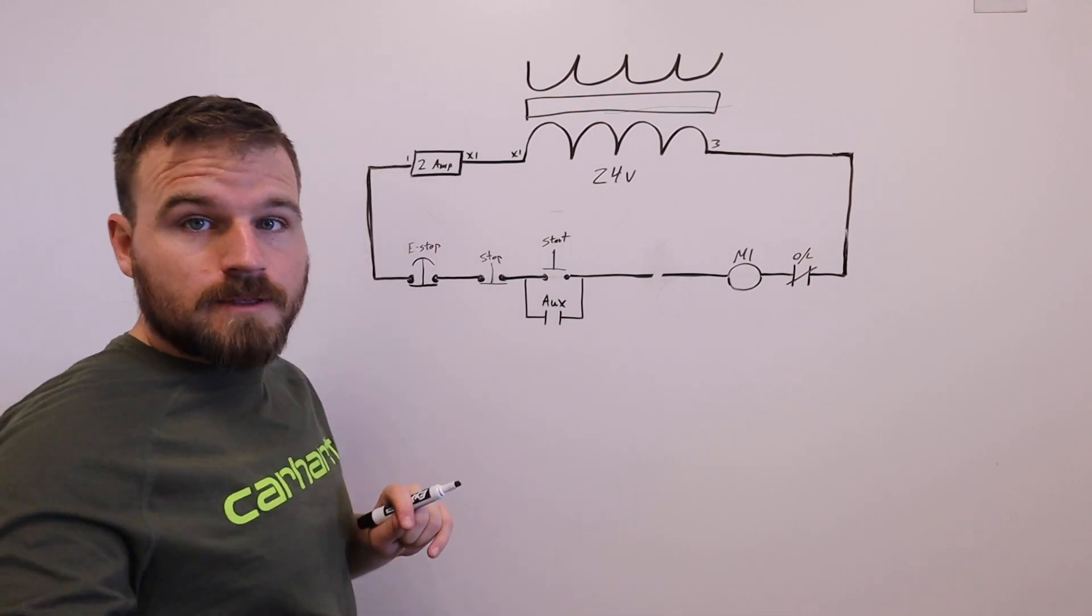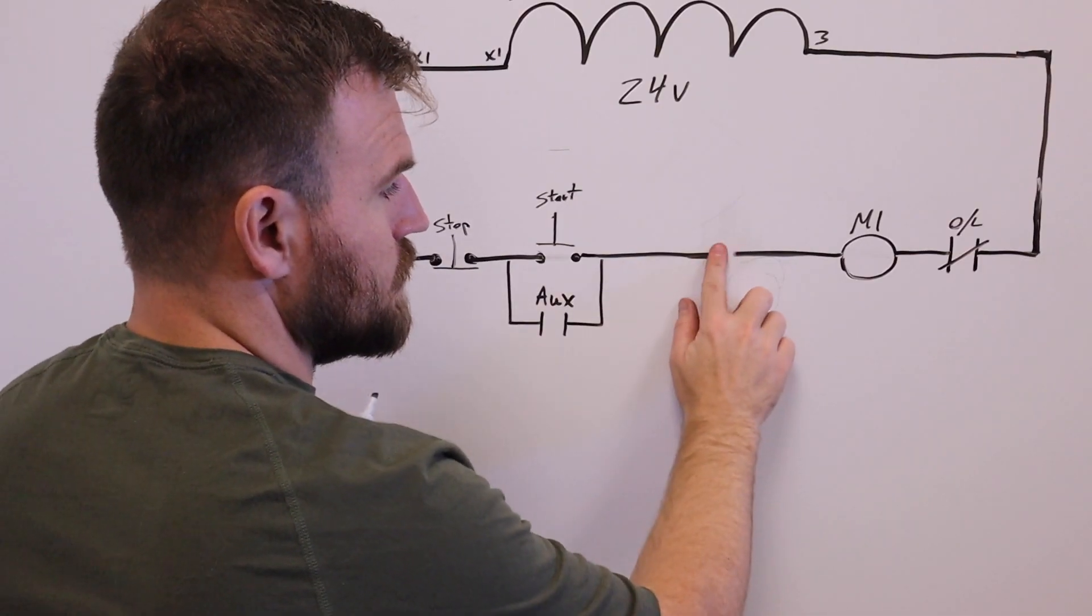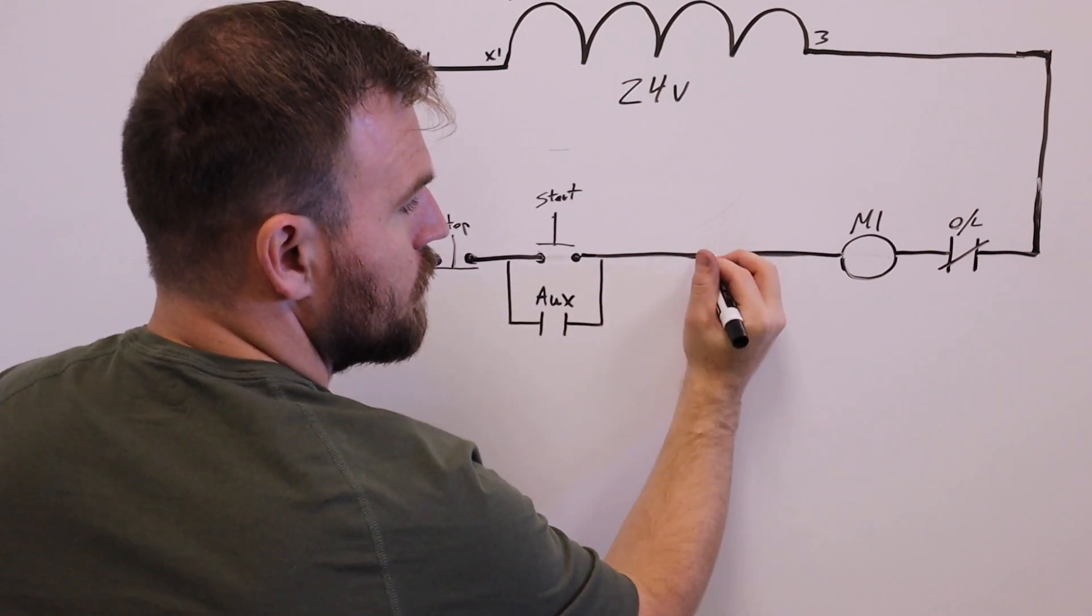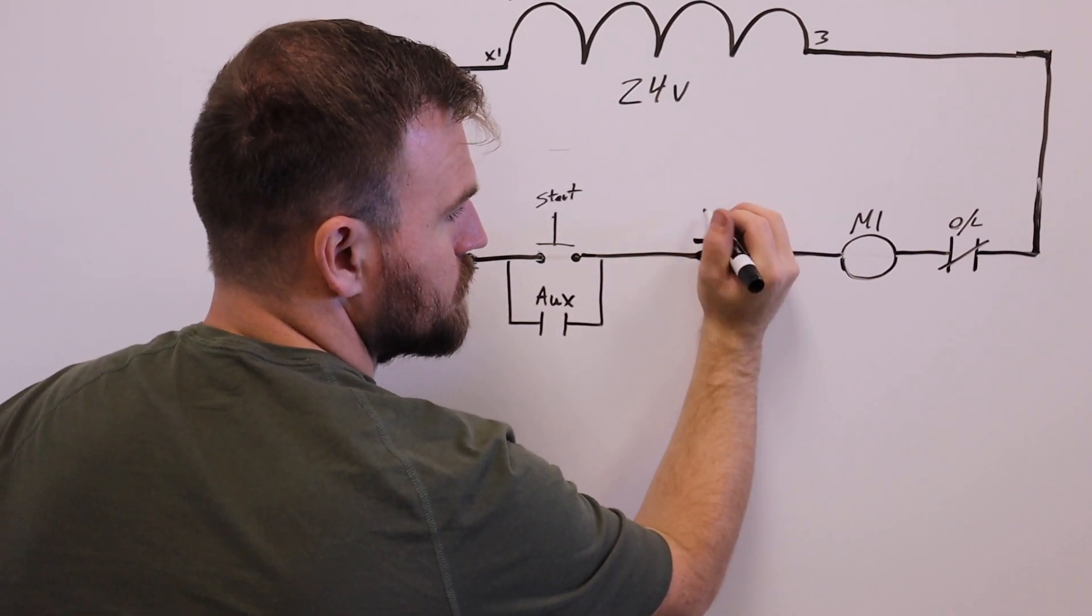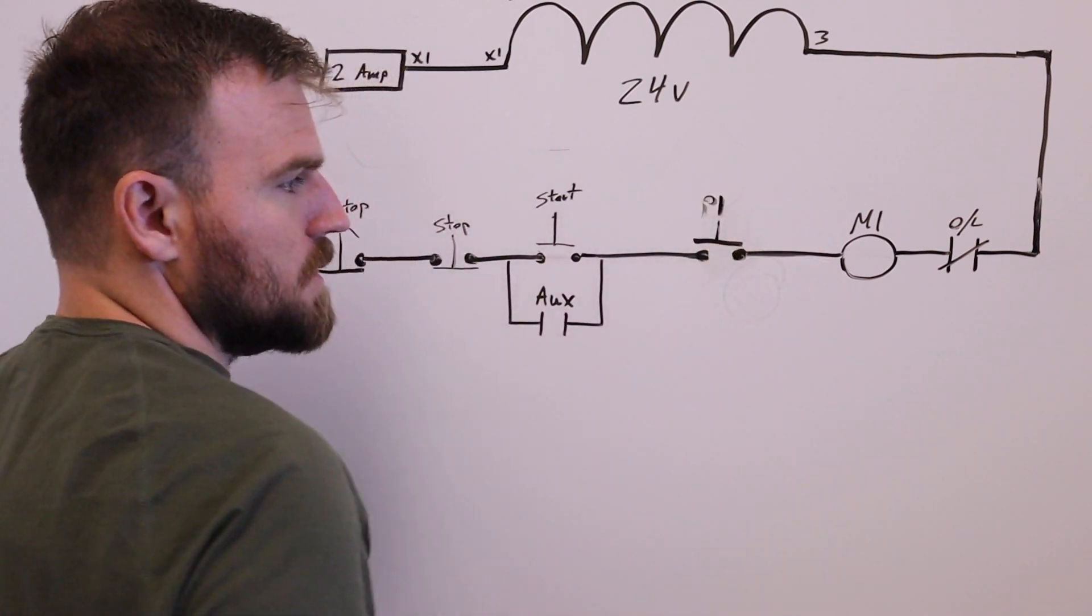We're just going to figure out a way to cut this wire right here. So what we're going to do, and let me go ahead and zoom in, we're going to put a push button right here in the middle. And this one's going to be our permissions. We're just going to call it P1, so permission one.